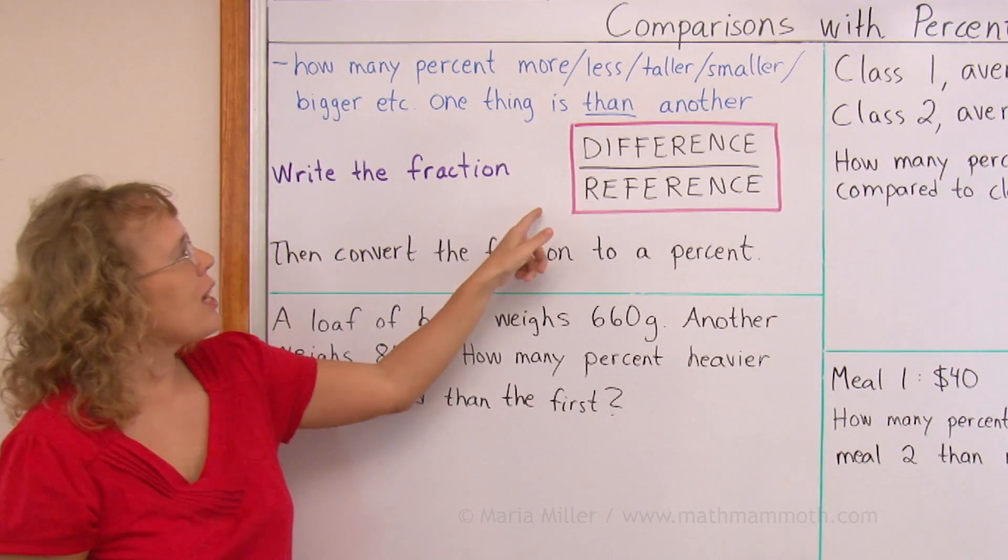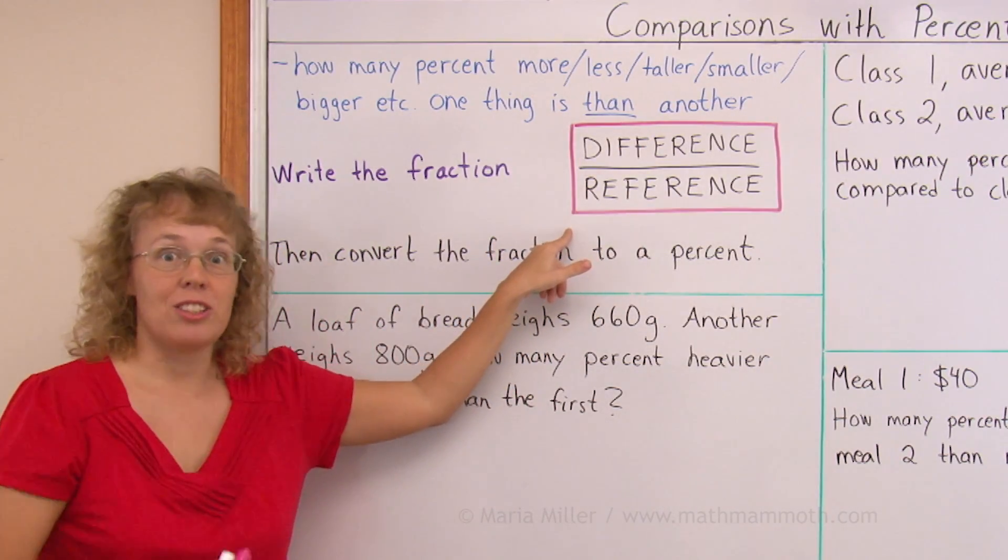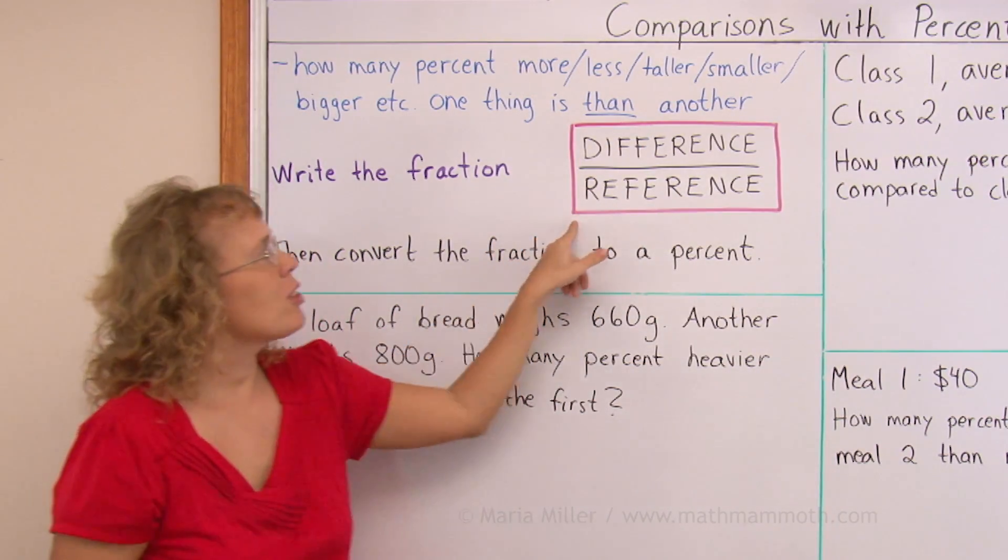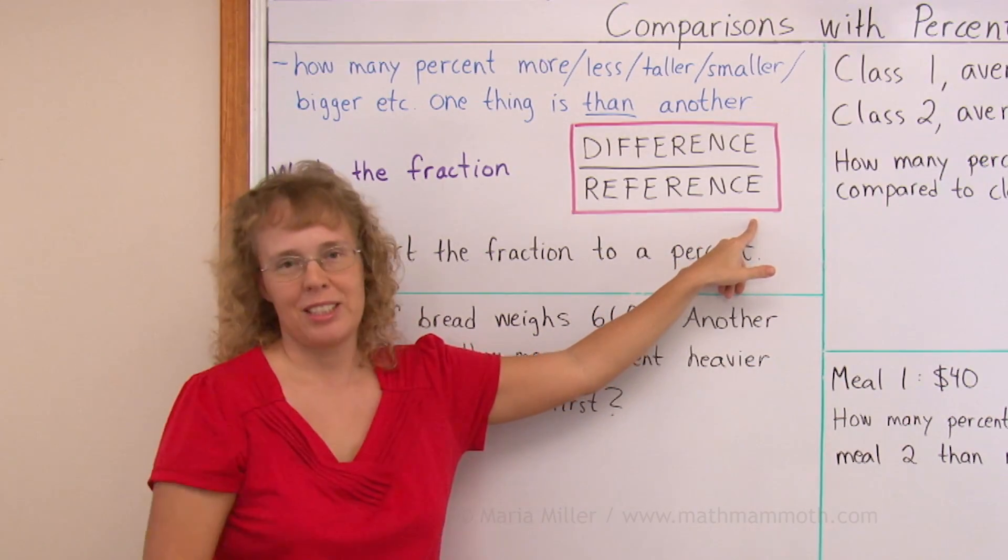Examples will make this clear just in a moment. And then once we have our fraction, we just convert that fraction into a percent. Maybe first into a decimal and then into a percent.